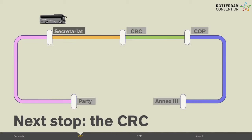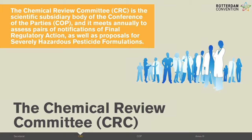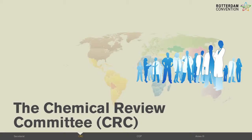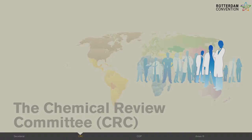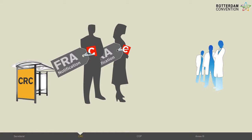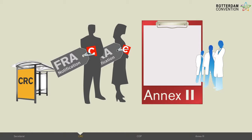The next stop on the bus ride is the CRC — the Chemical Review Committee. This Chemical Review Committee is the scientific subsidiary body of the Conference of the Parties to the Convention. It meets annually to assess pairs of notifications of final regulatory actions as well as proposals for severely hazardous pesticide formulations. The Committee includes 31 independent scientific experts from across the globe, nominated by parties.